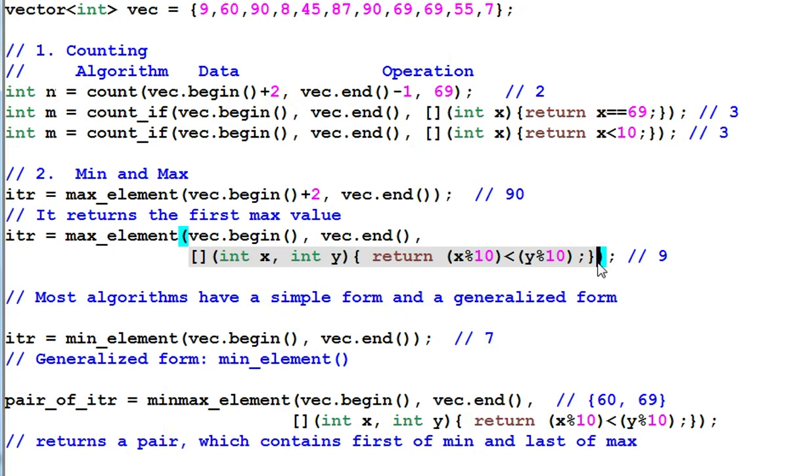Max element also has an overload function that allows me to provide my own version of the comparison function to determine who is bigger and who is smaller. And in this case, I'm only looking at the last digit of the elements. So, this function will return the first element whose last digit is the biggest. So, it will return 9. The first version of the max element uses the default comparison function of less than.